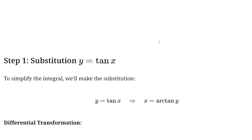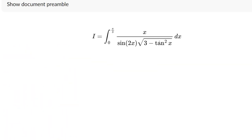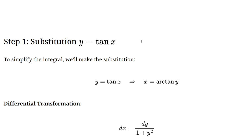Our first step: we're going to make the substitution that y is equal to tangent x. Let's figure out the motivation for doing that. We have a square root of three minus tangent squared x. Except for that three, if that were just a y or u, we might be able to do something with that. So we're going to make that substitution.